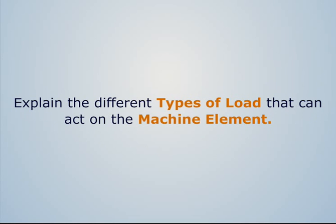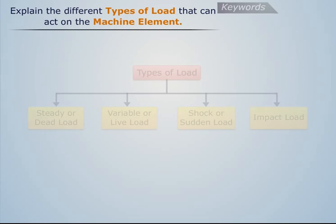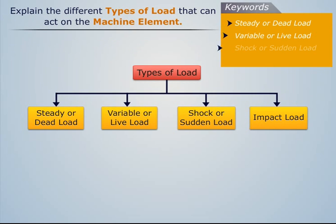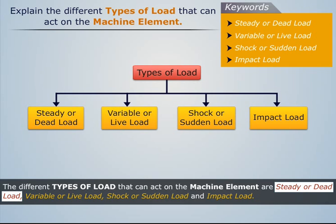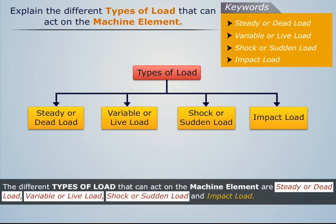Explain the different types of load that can act on the machine element. The different types of load that can act on a machine element are: steady or dead load, variable or live load, shock or sudden load, and impact load.